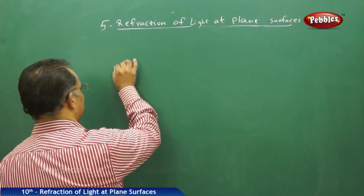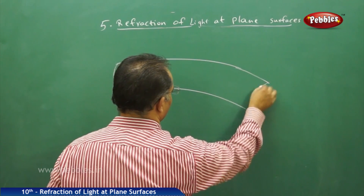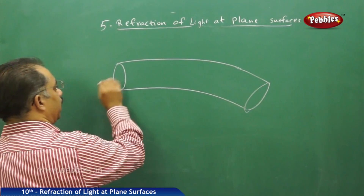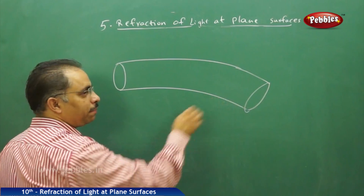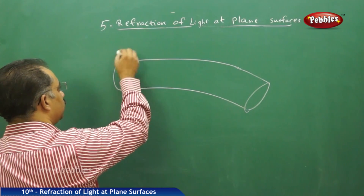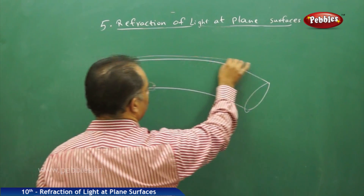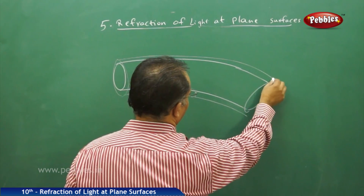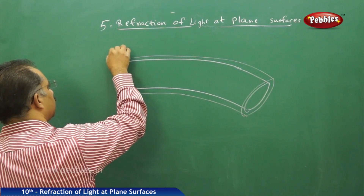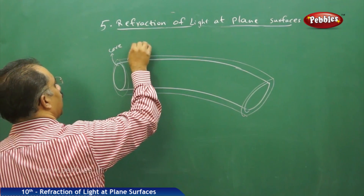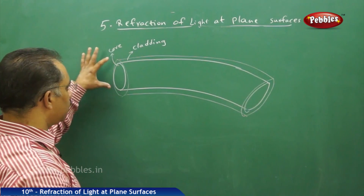If I have a fiber like this, and a light ray is passing through this way, you cannot expect the light ray to pass straight when the fiber is bent. Now, the internal part is called the core and the outer part is called the cladding. Cladding is the cover; core is the internal area.